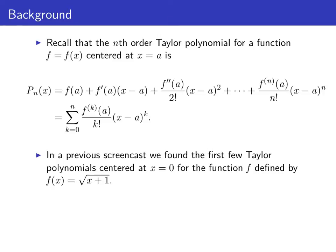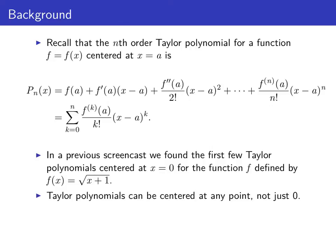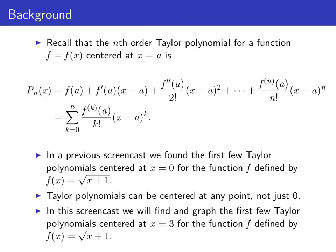In a previous screencast, we looked at the first few Taylor polynomials centered at zero for the function f defined by f of x equals the square root of x plus one. Now as we see with this formula for p sub n of x centered at a, Taylor polynomials can be centered at any point, not just zero. So in this screencast, we're going to look at the Taylor polynomials of the same function f of x equals square root of x plus one, but this time centered at x equals three.